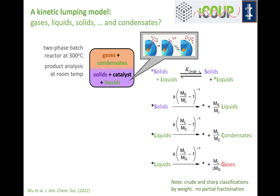One thing we began to worry about is that if the catalyst resides in the liquid, anything that evaporates during the reaction is effectively protected from further reaction — which could actually be an advantage. This led us to think very carefully about the sample drawn during reaction conditions at 300°C being cooled before going into the GC. We had to think about what are gases at reaction conditions and room temperature, liquids at reaction conditions and room temperature, solids that only form after cooling, and condensates that were gases but condense back to liquids.